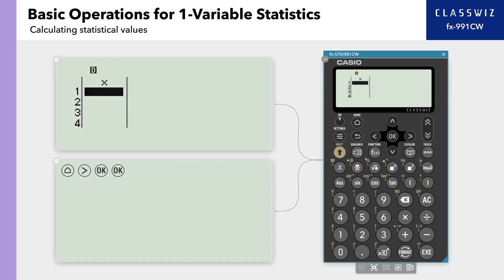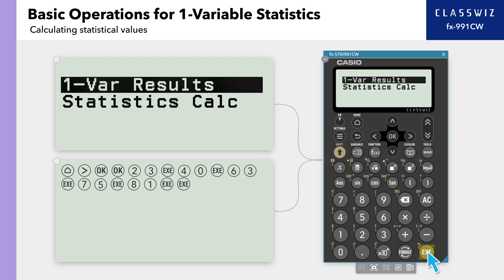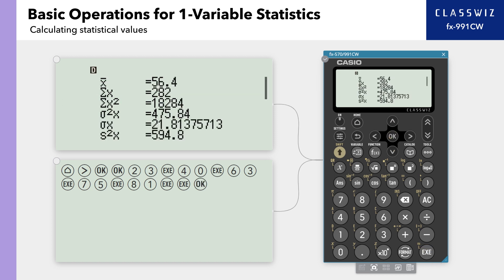On this screen, enter the data 23, 40, 63, 75, and 81. After entering all data, press execute, then select one variable results to see a list of statistical values.